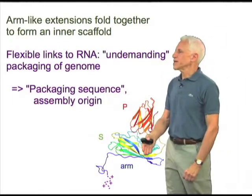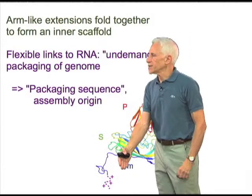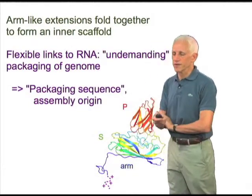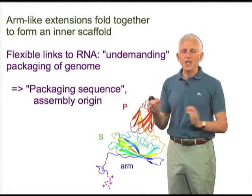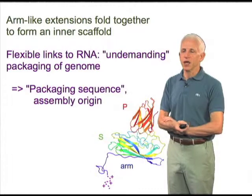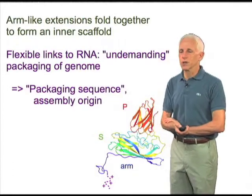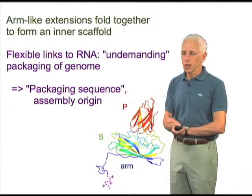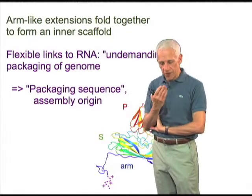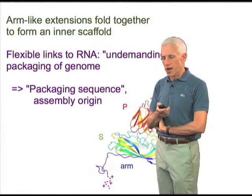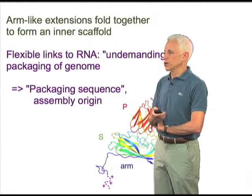In the case of tomato bushy stunt virus, at the tip of the arm is a very positively charged polypeptide segment that condenses the RNA and neutralizes the strong negative charge on the phosphates. The specific recognition interactions in the case of bushy stunt virus, we don't have a picture of.